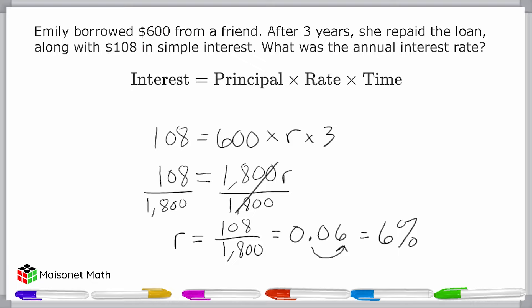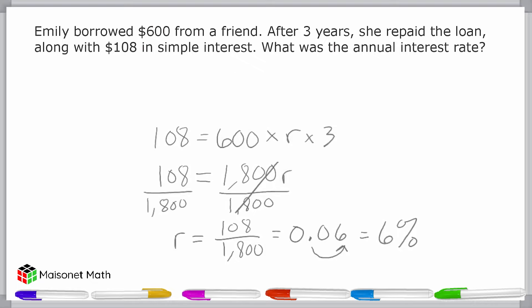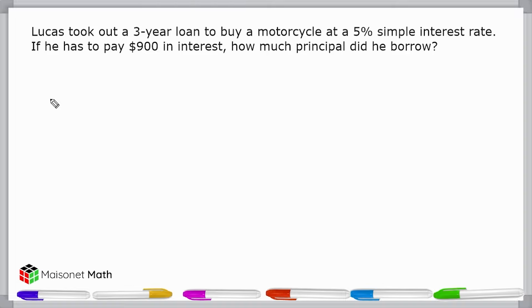Let us go ahead and solve the next problem. This problem reads that Lucas took out a three-year loan to buy a motorcycle at a 5% simple interest rate. If he has to pay $900 in interest, how much principal did he borrow?